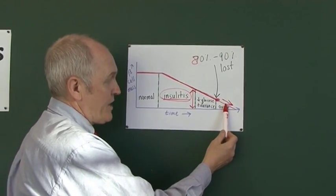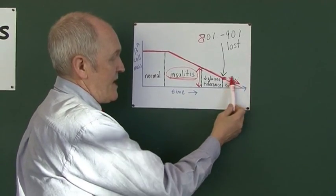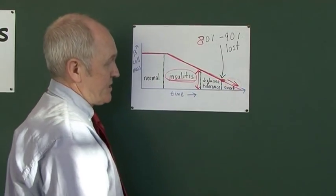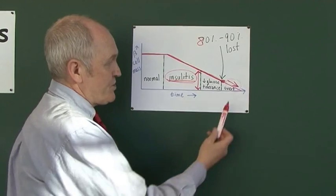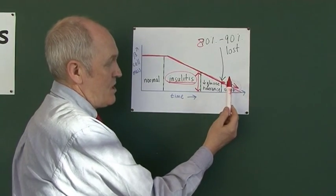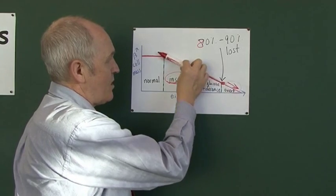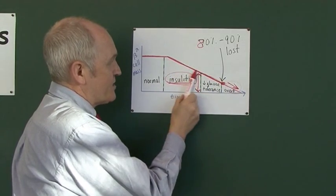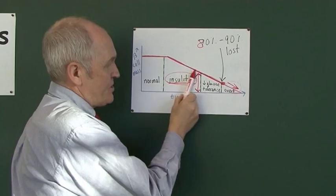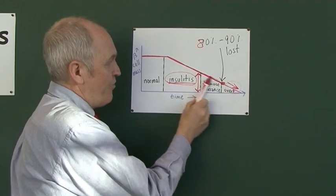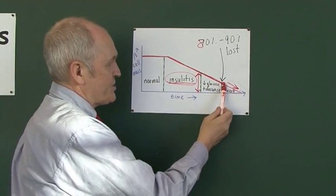And this can be quite an acute event, often precipitated by an infection or something. But the patient can present with just a history of a week or two of not being very well. But even though this process has been going on, almost at a subclinical level, in terms of the patient not having clinical features, for several years before they actually present.